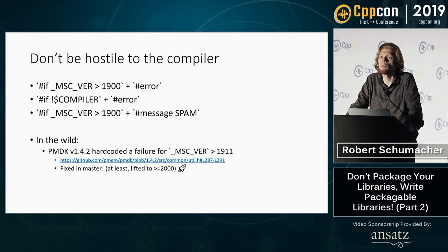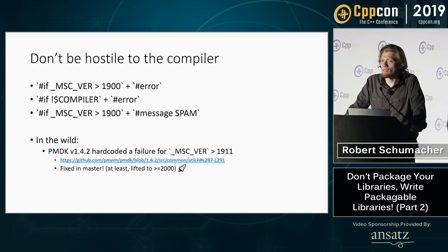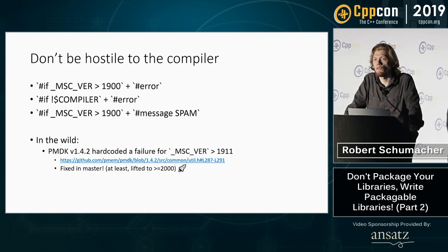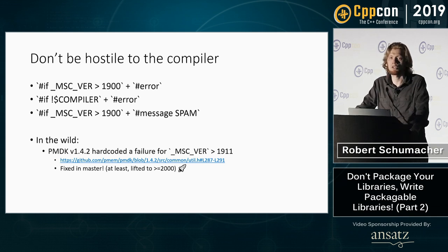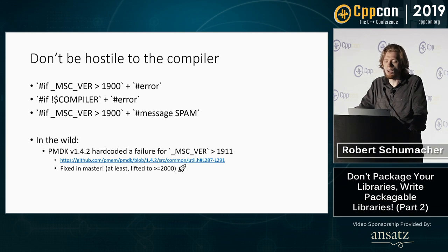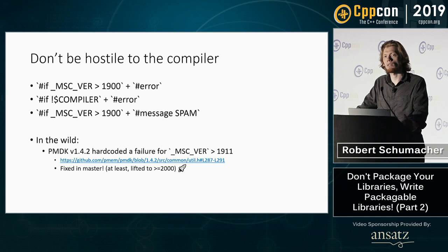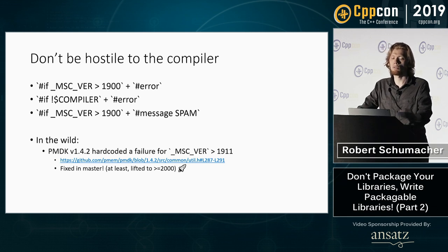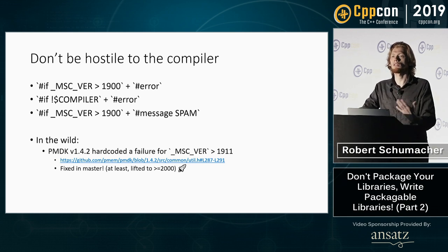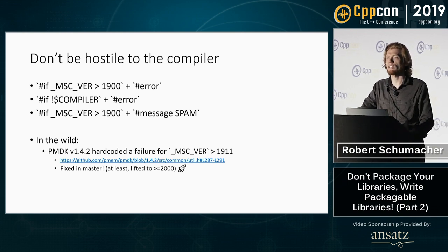The second part is: don't be directly hostile to the compiler. There is generally no need to say if the compiler version is greater than the version you've tested — hard error. You think that's crazy, but it happens. PMDK 1.4.2 had exactly this check: if MSVC_VER is greater than 1911, which corresponded to some particular VS release, then hard error — because they hadn't actually built that code on that compiler before. Be optimistic. Let your users try to compile things in environments that you may not necessarily have tested, because there's no way you can actually test every single environment.